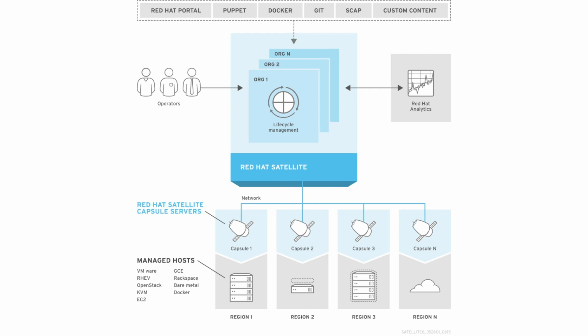It's worth noting that these features apply to bare metal machines, and also cloud providers, such as private cloud providers including OpenStack and Red Hat Enterprise Virtualization, and public cloud providers such as EC2.